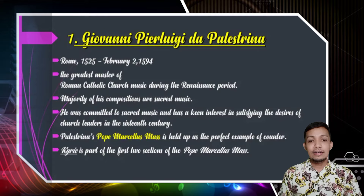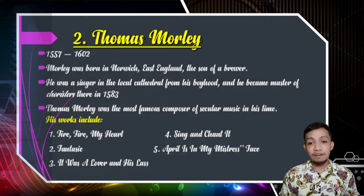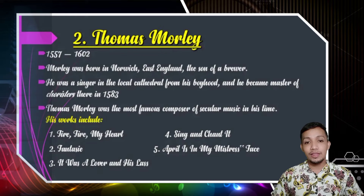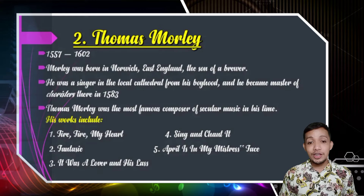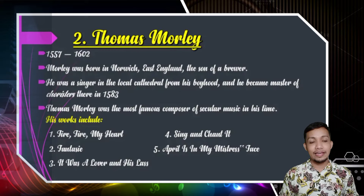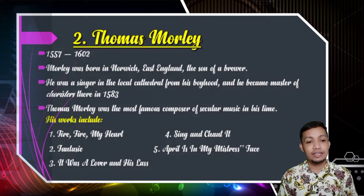Kyrie is part of the first two sections of the Pope Marcellus Mass. The second composer during the period was Thomas Morley. He was born in the year 1557 and died in the year 1602. Morley was born in Norwich, East England, the son of a brewer. He was a singer in the local cathedral from his boyhood, and he became master of choristers there in 1583. Thomas Morley was the most famous composer of secular music in his time. His works include Fire Fire My Heart, Fantasy, It Was a Lover and His Lass, Sing and Chant It, and April Is in My Mistress' Face.